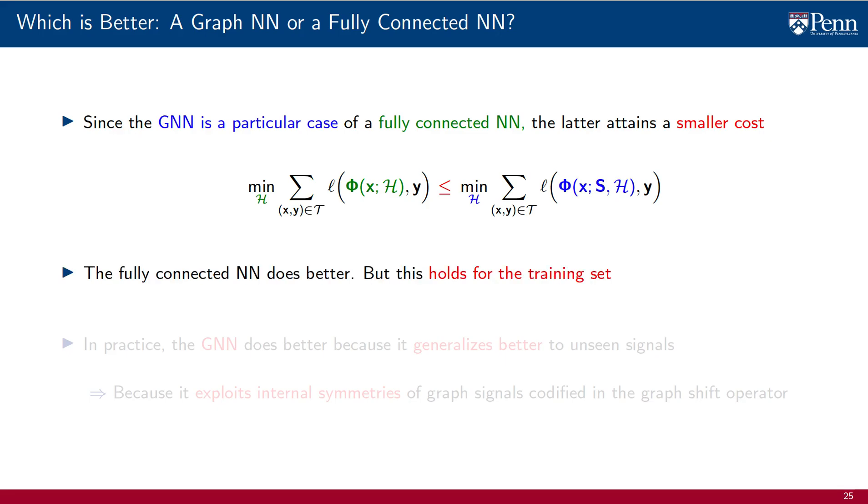This seems to indicate that the fully connected neural network does better, but this reduction in cost holds for the training set, which does not necessarily translate to the operation of the neural network. In practice, the GNN does better during operation because it generalizes better to signals or to examples that have not yet been seen.